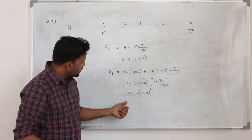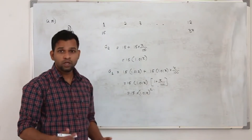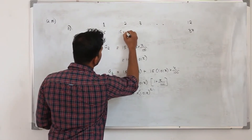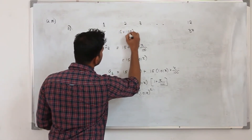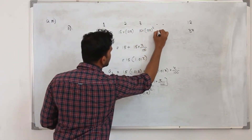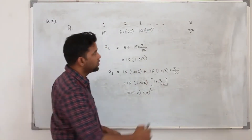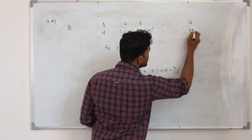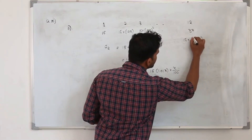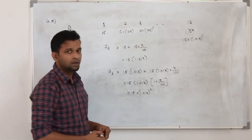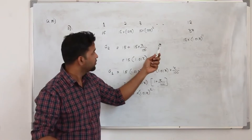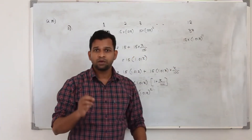Rewriting with common ratio r, the sequence is: 15, 15r, 15r², and so on. The last term in week 12 is 15r to the power 11. For the 2nd term the exponent is 1, for the 3rd it's 2, and for the 12th term it's 11.